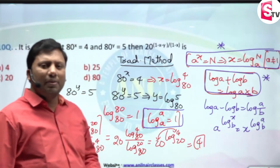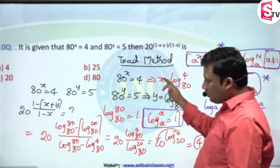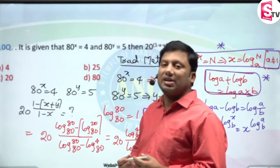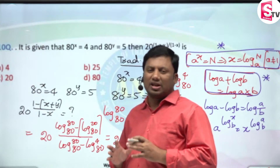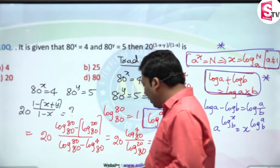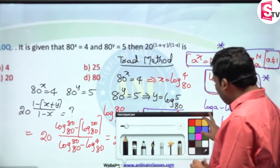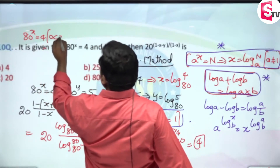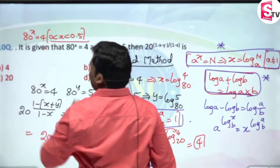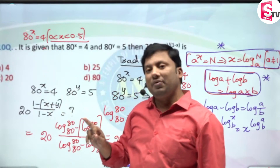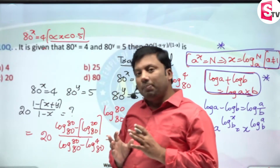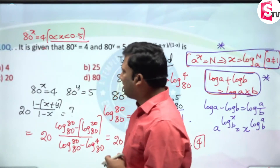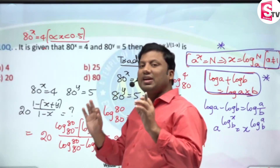Just by looking at the question we can identify each step, but it is time-consuming — anywhere from 45 seconds to 1 minute. Now let me tell you Anil Nair's way of solving this. Given 80^x = 4: can I say x lies from 0 to 0.5? Because 80^0 = 1, and 80^0.5 < 81^0.5 = 9. Since 4 is less than 9, x is clearly greater than 0.